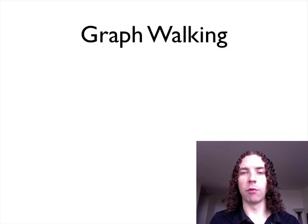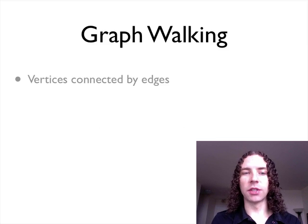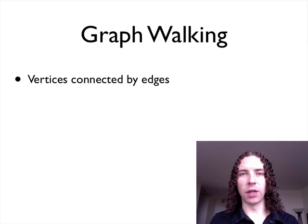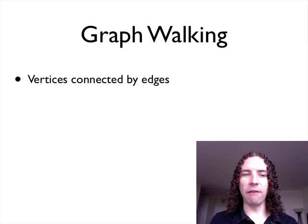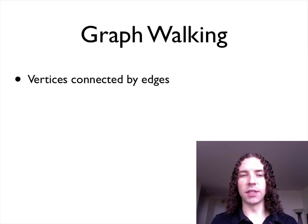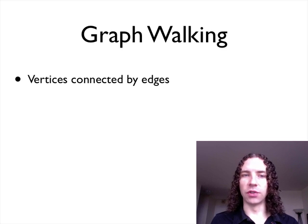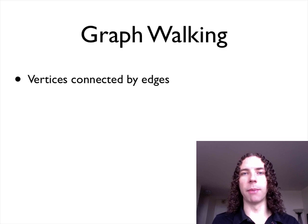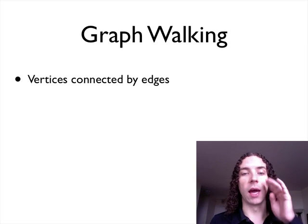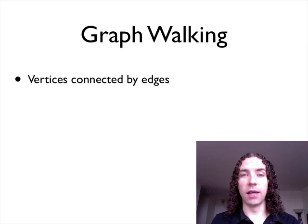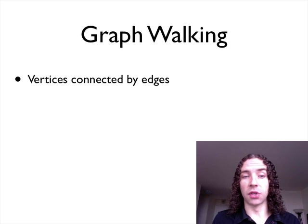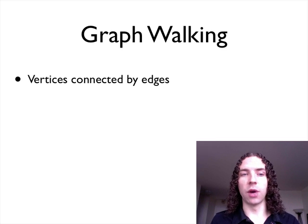So first of all, graph walking — just a bit of a refresher. A graph is nothing more than a set of vertices connected by edges. The nature of these edges is something which kind of changes depending on which kind of graphing problem you're looking at, but that's the basic abstraction. Those are the terms we use to describe it.